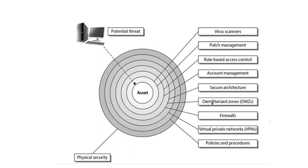Bad actors cannot penetrate the firewall of the demilitarized zone, so it is protected by firewalls. Firewalls sit right above or below the demilitarized zone and protect it. The next layer is virtual private networks — dedicated networks that others cannot use.